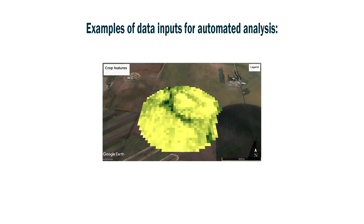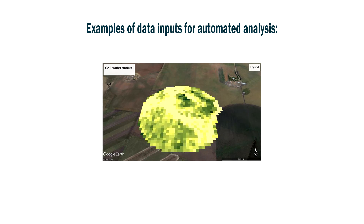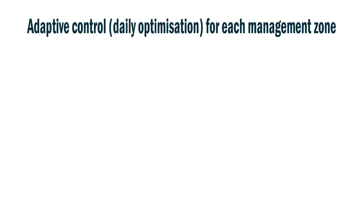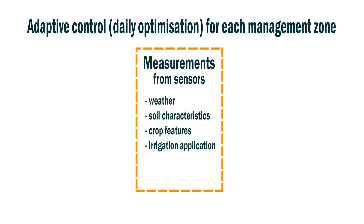Our research aims to take this further and consider a wider range of factors to truly optimise the site-specific irrigation. The kinds of inputs that we use are soil and weather information from online databases, as well as crop features from in-field imagery.